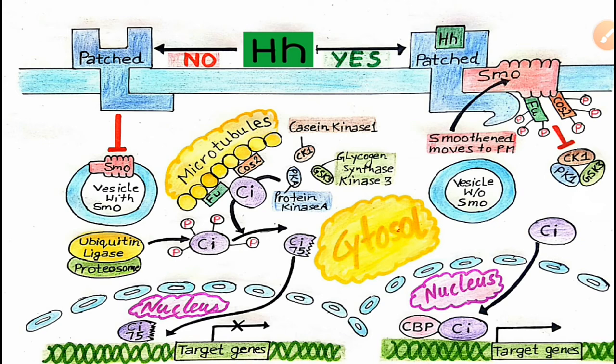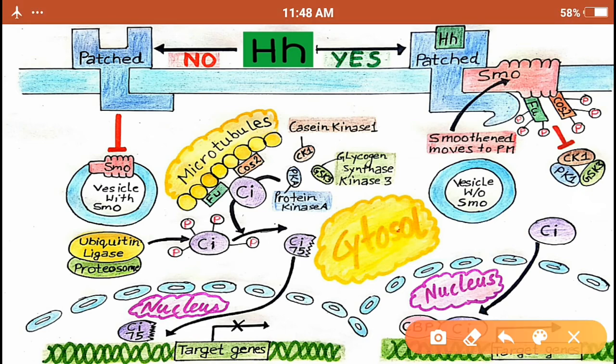This pathway also has the same kind of protein which is known as CI. Initially in the resting state of the cell, this CI is tethered to the microtubules with the help of the Fused protein and COS2 or Costal-2 protein. Then this protein is acted upon by